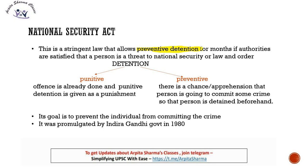First, let us understand what preventive detention means. Detention means to detain and keep someone in jail. Detention can be of two types: punitive detention and preventive detention. Punitive detention — as the name suggests, 'punitive' means punishment. Punitive detention is given as punishment when someone has already committed an offense or a crime. So offense is already done, and punitive detention is given as a punishment.